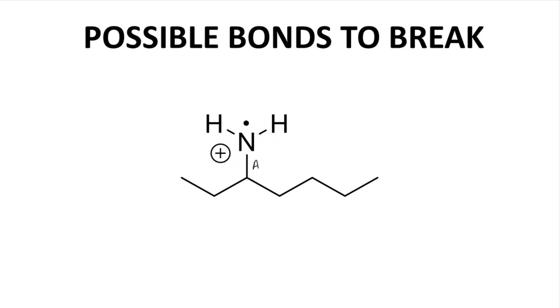We also mentioned bonds adjacent to the radical cation. That would mean the bonds on this carbon. Make that darker. So this CC bond, bond B.